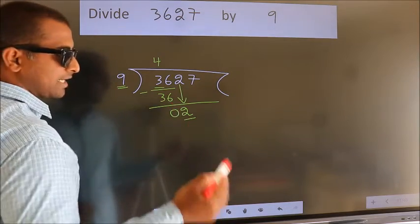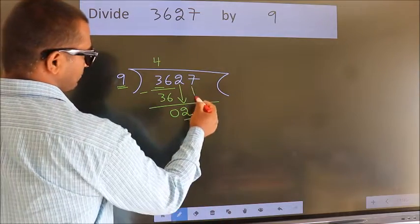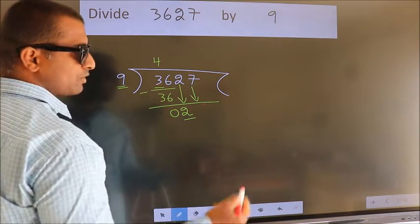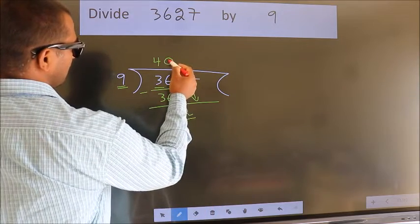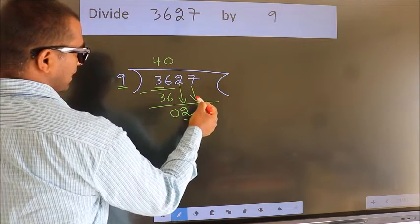So we should bring down the second number. And the rule to bring down the second number is put 0 here. Then only we can bring down this number.